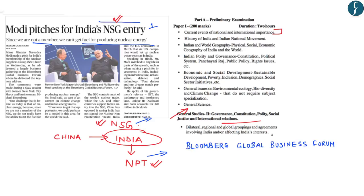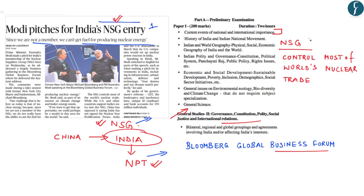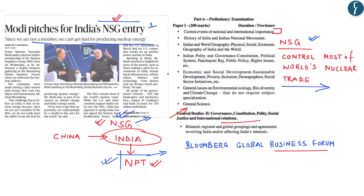It was at the Bloomberg Global Business Forum where the Prime Minister of India addressed the keynote, and it was highlighted that because India is not a member of NSG, it becomes very difficult for India to get the fuel necessary for producing nuclear energy. The problem is that NSG controls most of the world's nuclear trade. While the United States and other countries support India's entry into NSG, China has opposed India's entry by saying that India has not signed the Non-Proliferation Treaty.